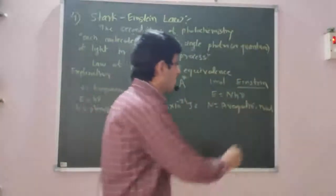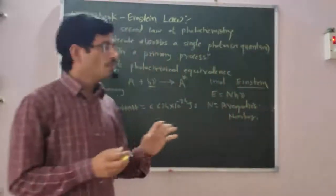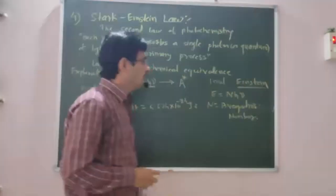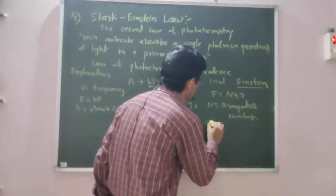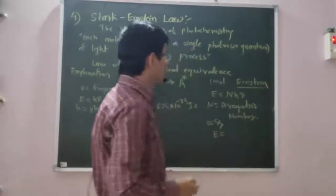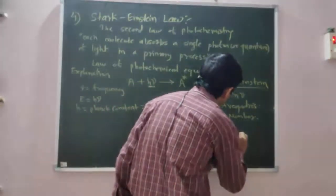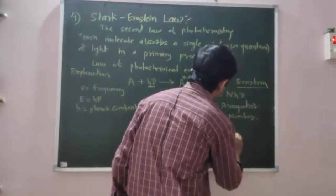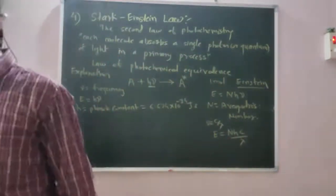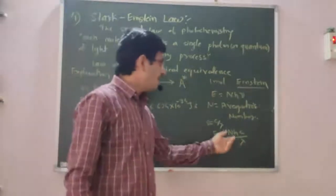The photon energy multiplied by Avogadro number gives the energy of one Einstein. Again, this frequency ν is given by the equation ν is equal to c upon λ. Therefore, energy of one Einstein, E is equal to N into h into c divided by λ, where λ is the wavelength.